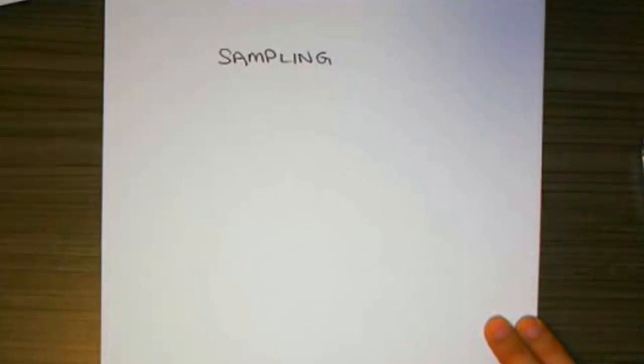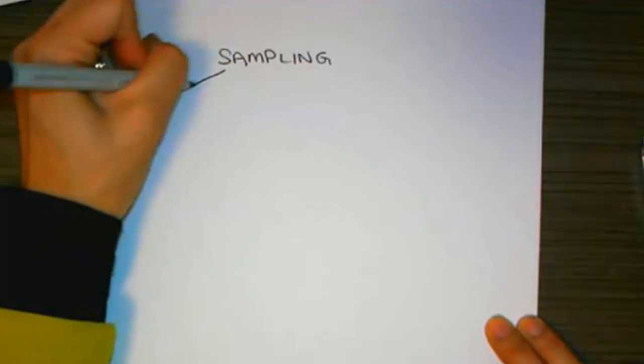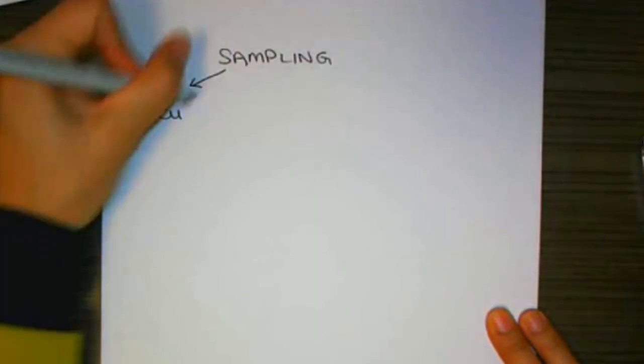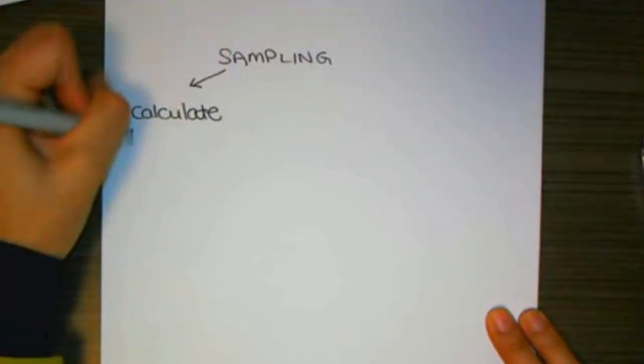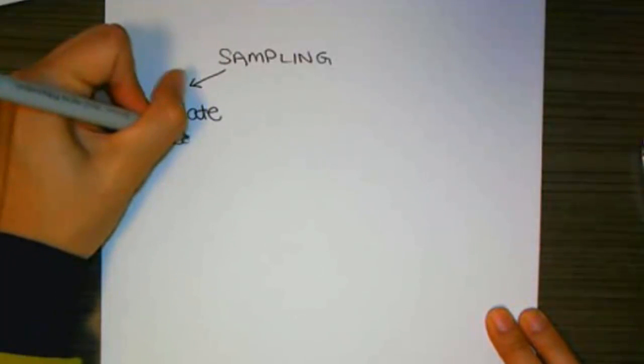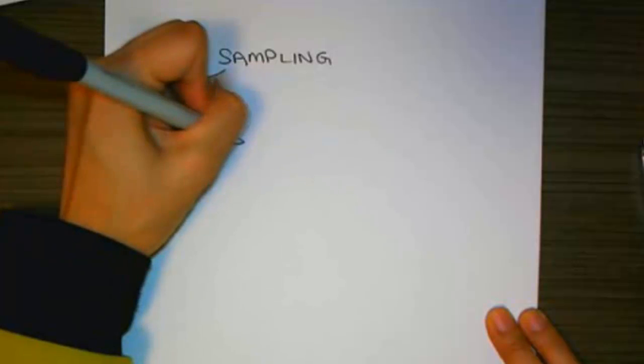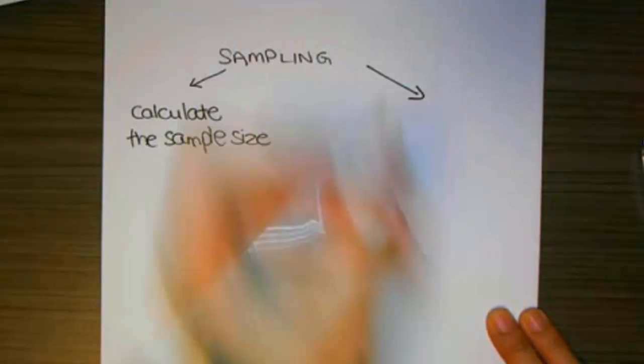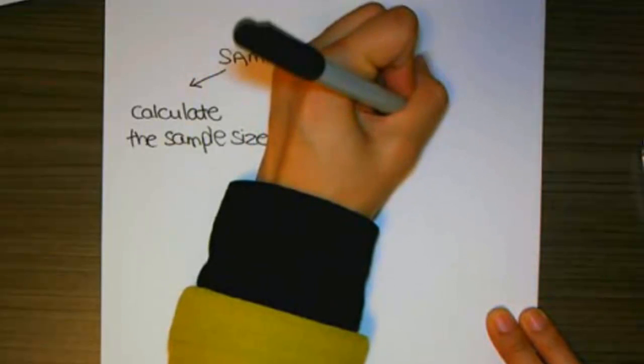So when we're sampling, I like to break sampling down into two components. The first part is calculating the sample size, and then the second component is the method to select the sample.